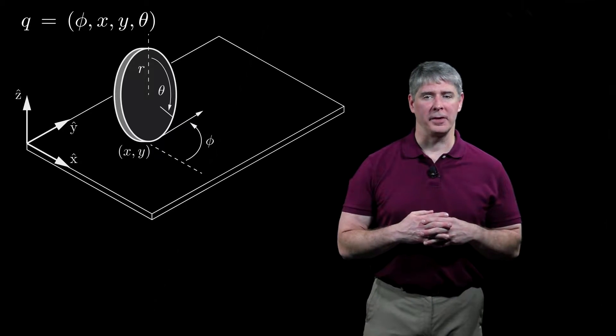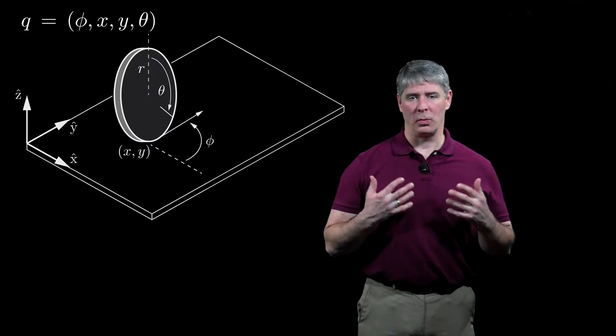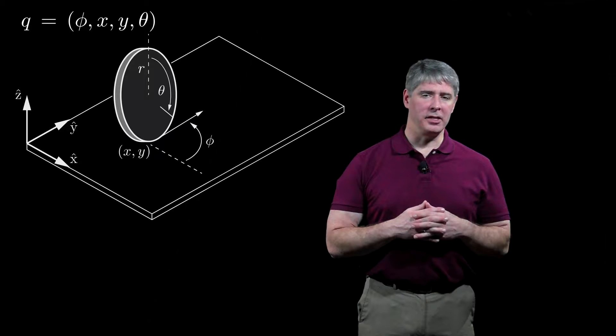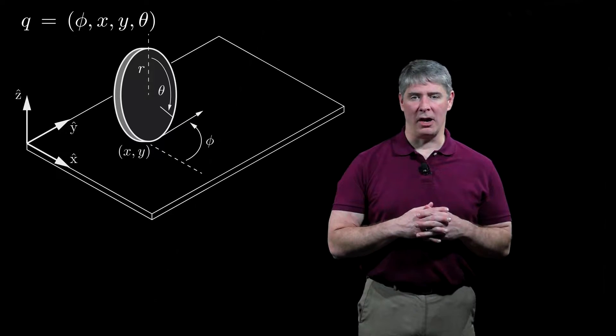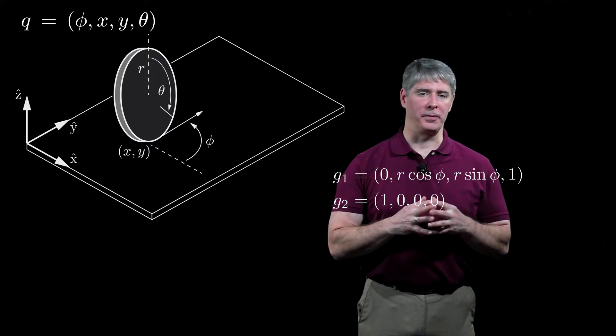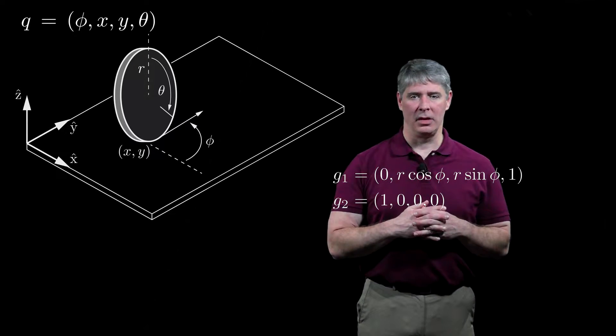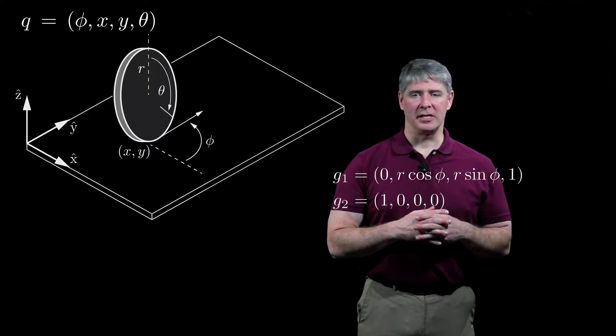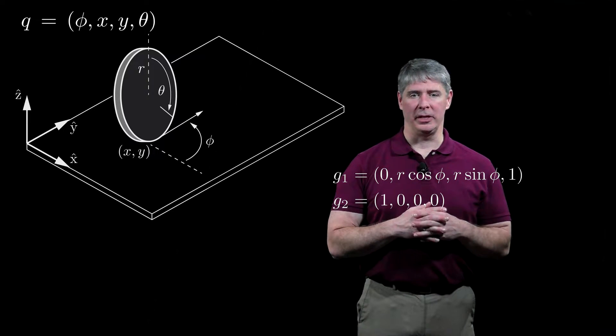Although we're usually only interested in the motion of the chassis, we could include other configuration variables in the description of the robot. For an upright rolling wheel, the full configuration is phi, x, y, and theta, where theta is the rolling angle of the wheel. If the radius of the wheel is r, then the forward motion vector field is g1 = (0, r cosine phi, r sine phi, 1), and the spin-in-place vector field is g2 = (1, 0, 0, 0).